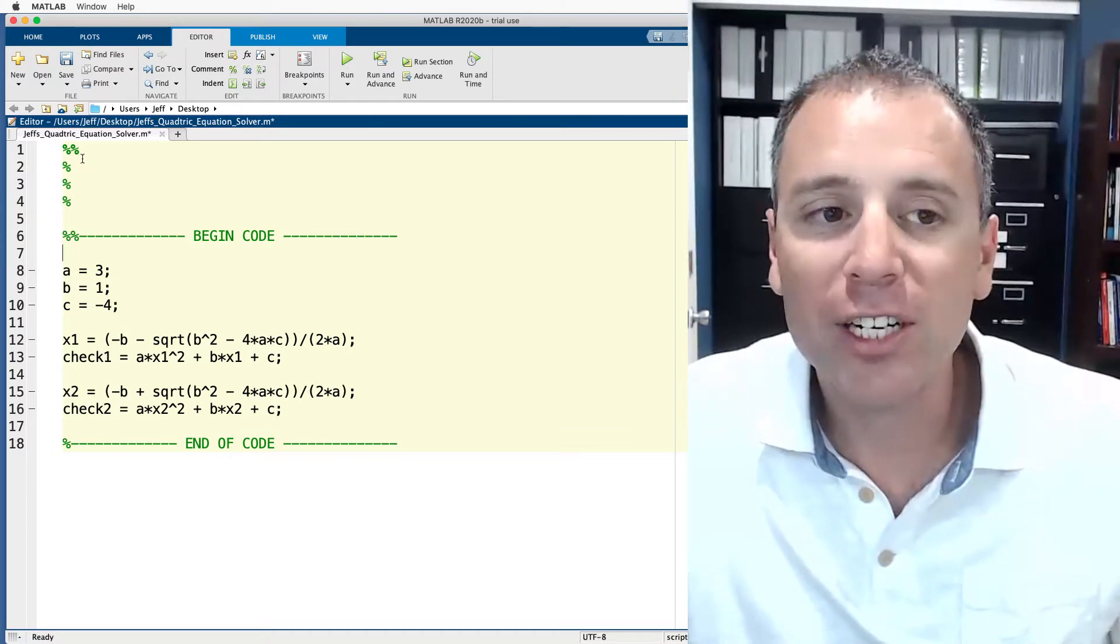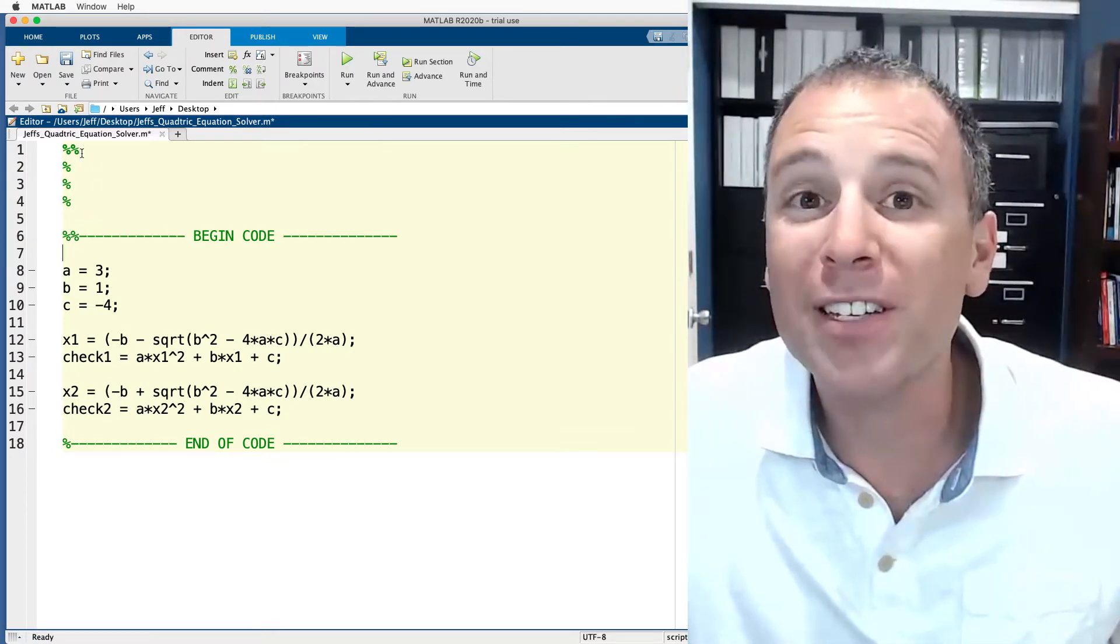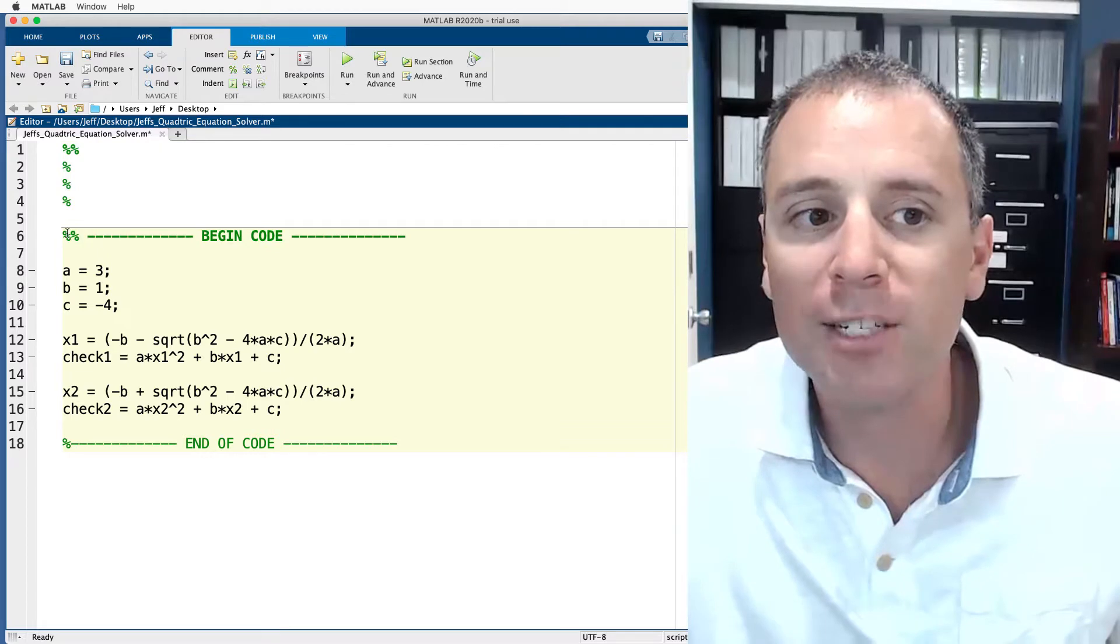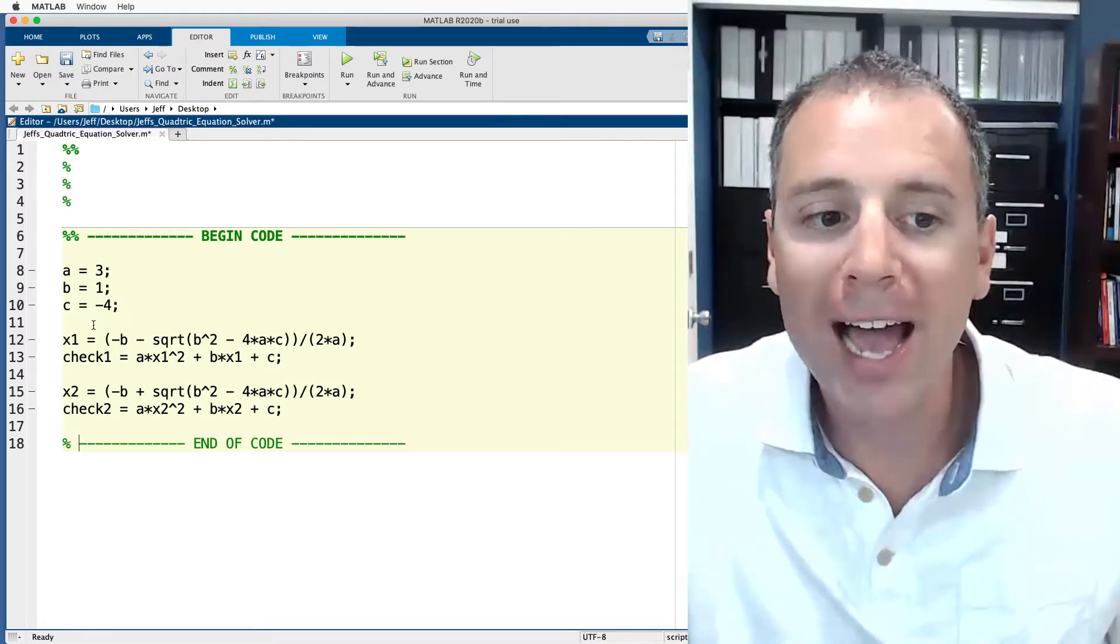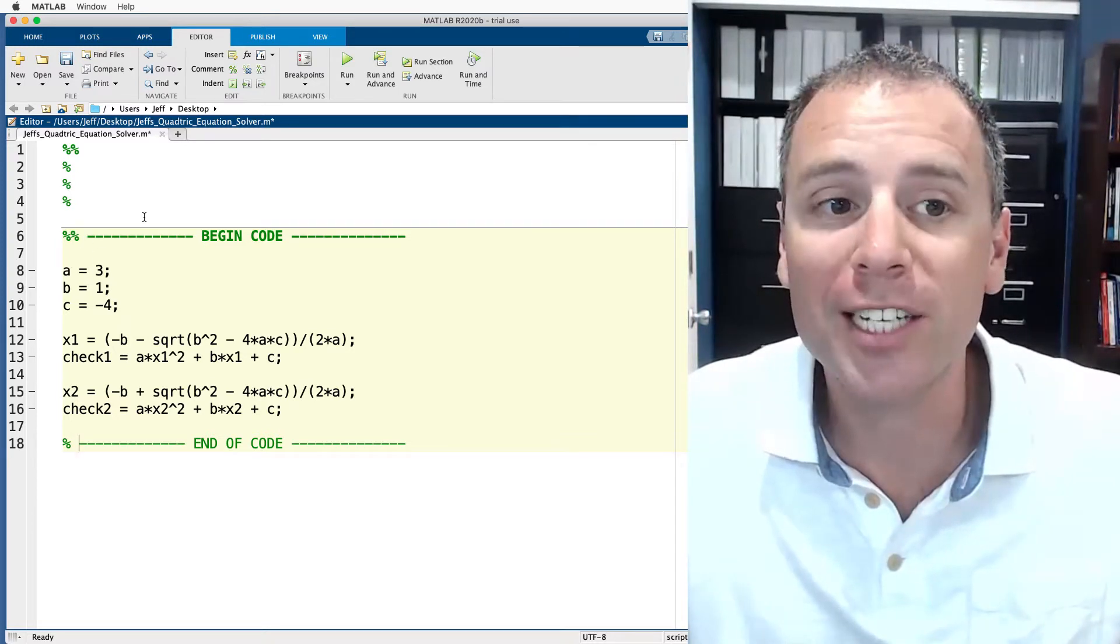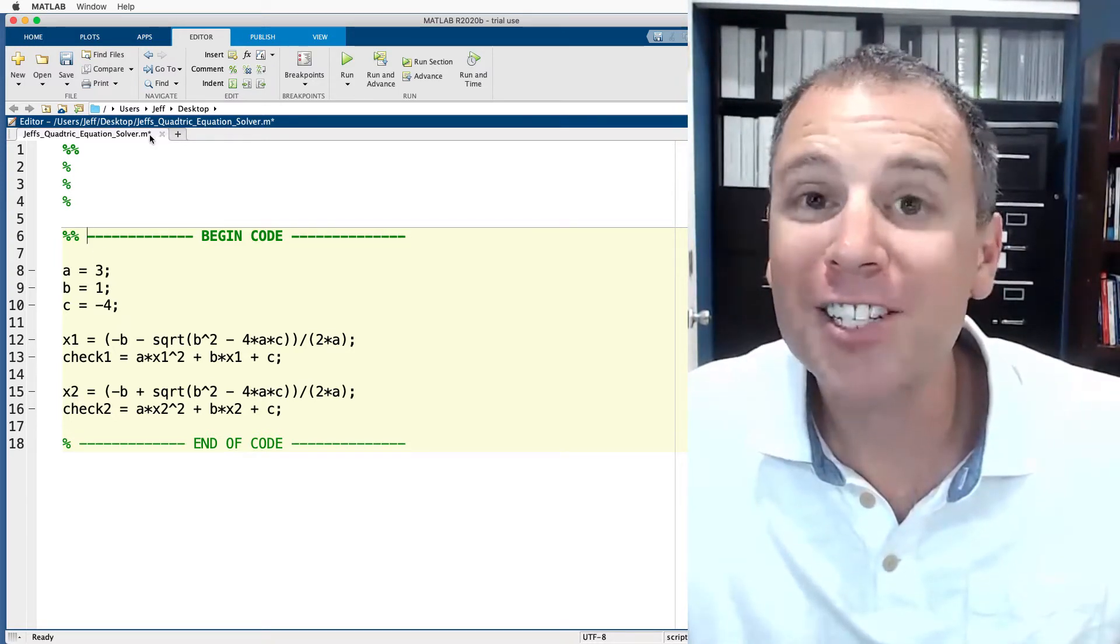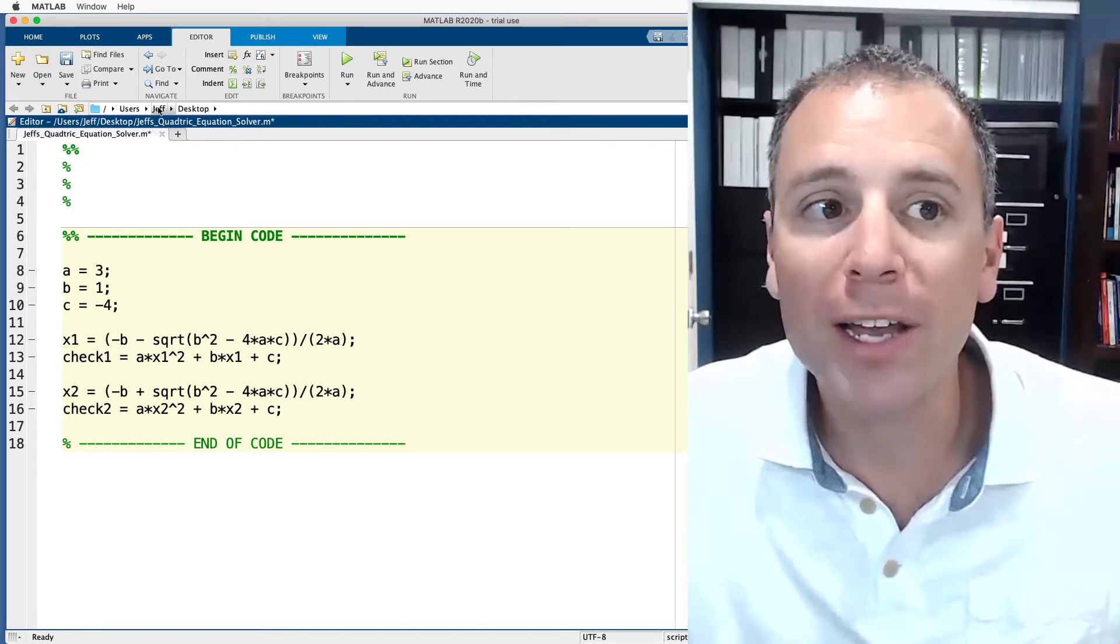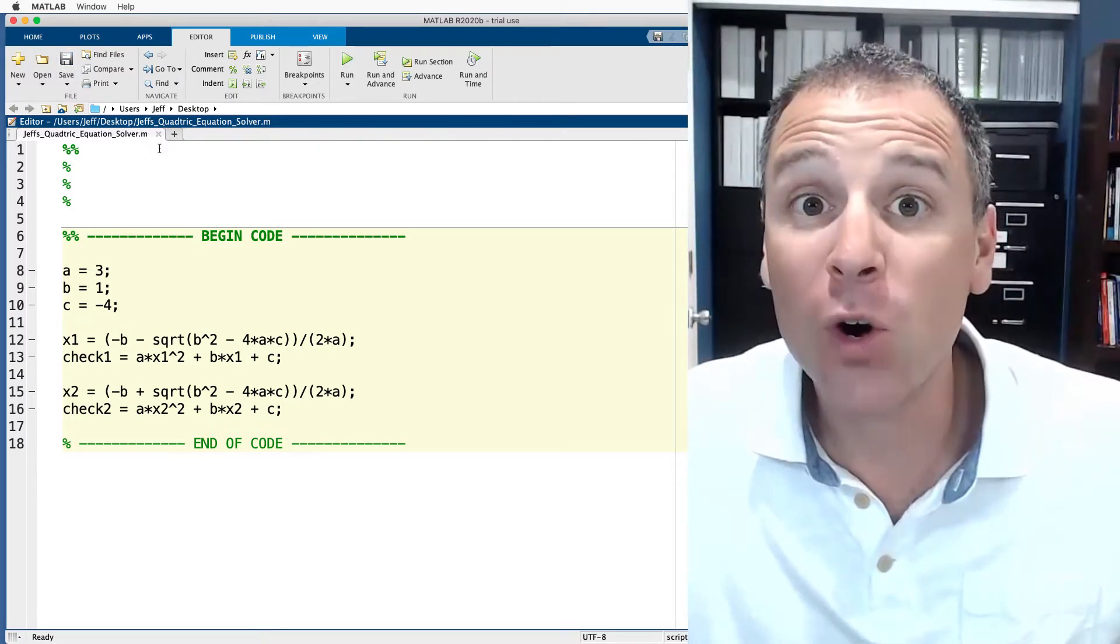Then I'll take my executable code and put it in between those percent signs. Notice that the section actually is being associated with the section above and that's because I do not have a space in between. The moment I add a space in between my double percent sign MATLAB recognizes that as its own section. I have not saved these changes because I have the little asterisk up there. Let's go ahead and make a save so that I don't lose anything.